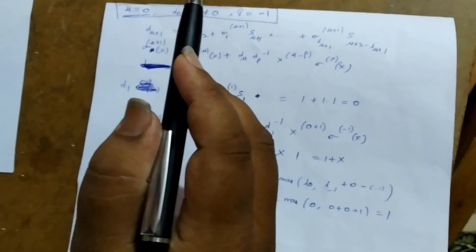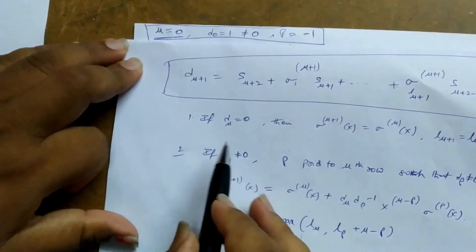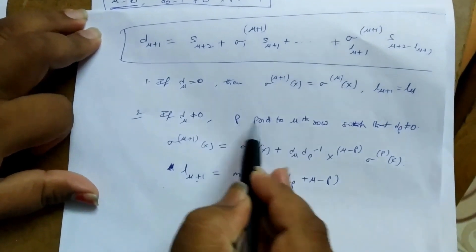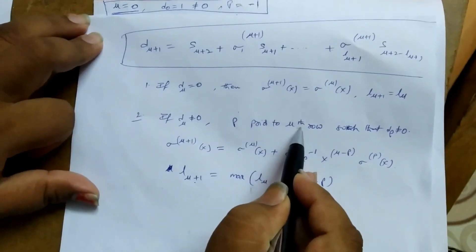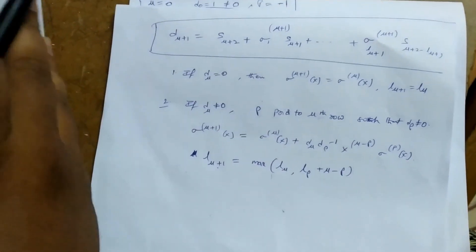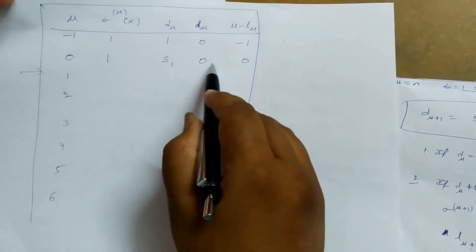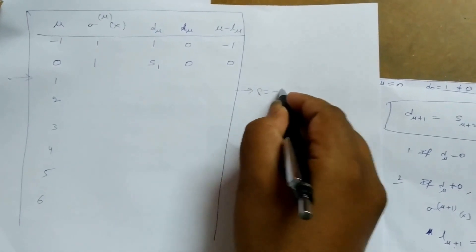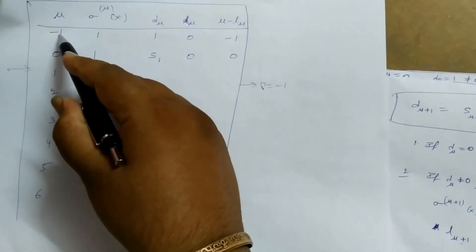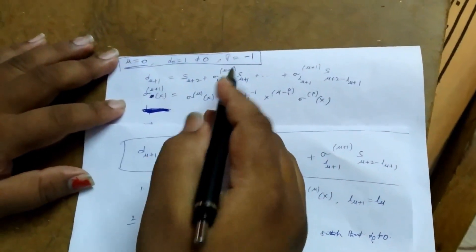The algorithm steps say: if d_μ is not equal to 0, we have to take ρ prior to μ. For μ=0, d_μ is not equal to 0, so we take ρ where d_ρ is not equal to 0. In this case, since μ=0 and d_μ≠0, we take ρ equal to -1. We take the prior value of μ where d_ρ is not equal to 0, so we assume ρ = -1.